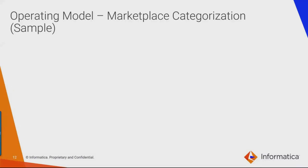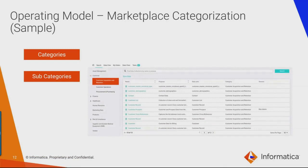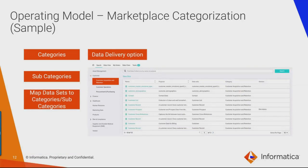The other set of configurations to touch upon is the marketplace configurations. We can categorize a collection of information in the marketplace into categories and subcategories, which provide additional context to published datasets and make it easier to navigate and locate datasets of interest. A category or subcategory needs to be created before a dataset can be published to the marketplace. The other item is data delivery options — these are mechanisms of how data gets delivered to an end consumer after the request is approved and fulfilled. It could be through a CSV file, a load extract into a database, or simply giving access to the dataset within the data lake.